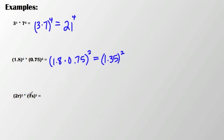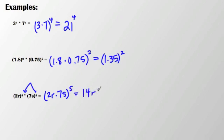How about 2r to the 5th times 7s to the 5th? When dealing with an algebraic expression, the rules follow the same — I still have the same exponent with different bases. So I'm going to go ahead and work 2r times 7s to the 5th, which gets me 14rs to the 5th. You have to be careful here, because writing just 14rs to the 5th without parentheses would mean only s is raised to the 5th power. By putting it all in parentheses, everything inside is being raised to the 5th power.